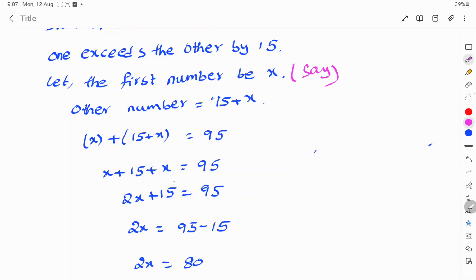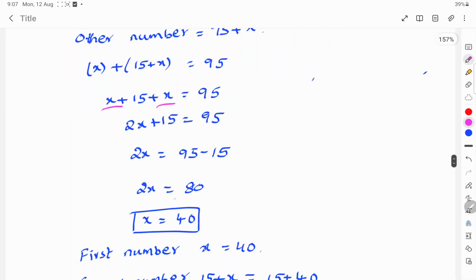x plus 15 plus x is equal to 95. X plus x is 2x, so 2x plus 15 is equal to 95. 2x is equal to 95 minus 15, because plus 15 changes to minus 15 when moved to the other side. So, 2x is equal to 80, and x is equal to 40.